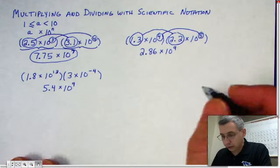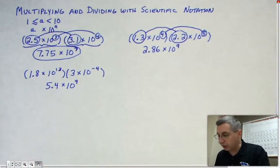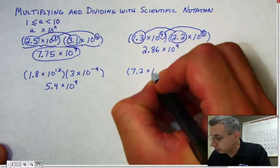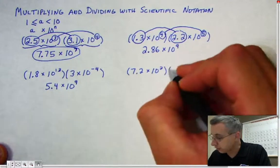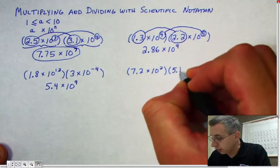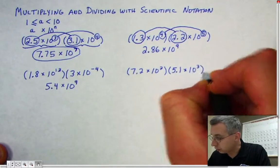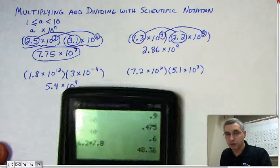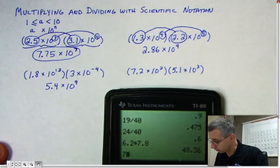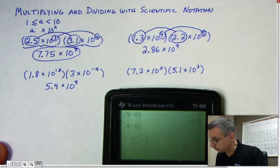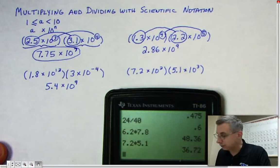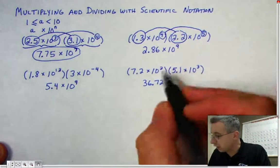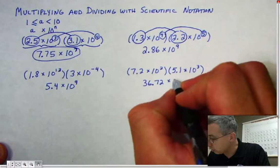Now the next one contains a little bit of a trick. You multiply 7.2 times 10 to the second by 5.1 times 10 to the third. You multiply 7.2 times 5.1 and when you do that you get 36.72. Write down 36.72, and then add the exponents: 2 plus 3 gives you 5.